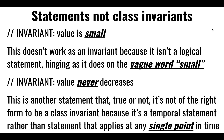A couple of things that might look like invariances but they're not. For instance, you might say that a particular value is small — but smallness is typically a very relative thing. It's small compared to what? Depending on the context, you might tell whether it's small or not, so there's nothing you can guarantee will always be true. There's no way to test this, so this is not a good invariance. Or 'it never decreases' — never is a long time.